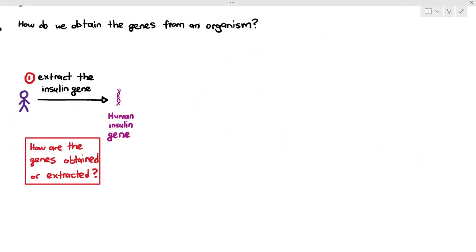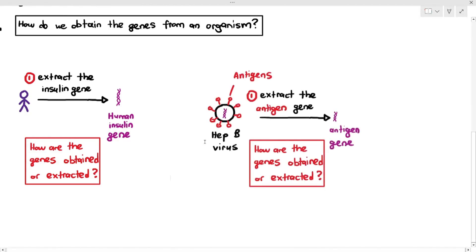For example, we want to get the human insulin gene out of the human. Another case is, how do we obtain the antigen gene from the hepatitis B virus? These were just the examples I was talking about in genetic modification. To obtain the gene from any organism, there are three ways we can actually obtain or extract the gene from the organism.